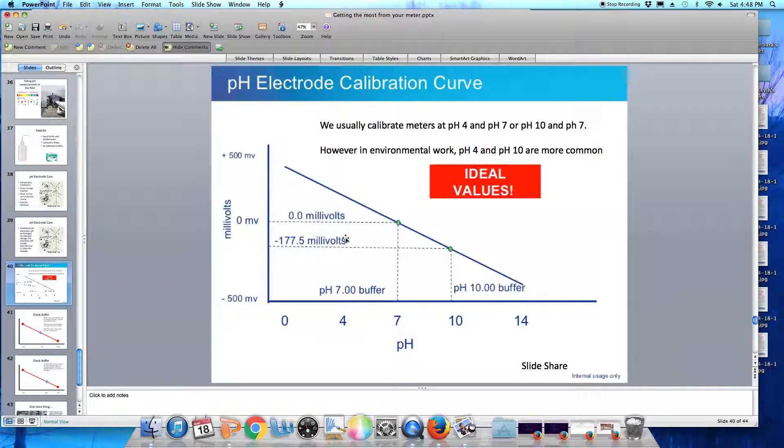The second buffer we would put our probe in for calibration would be, in this example, pH 10, which will generate a millivolt signal of minus 177.5 millivolts. So any pH reading we make between pH 7 and pH 10 will have a millivolt value somewhere between 0 and minus 177.5 millivolts.